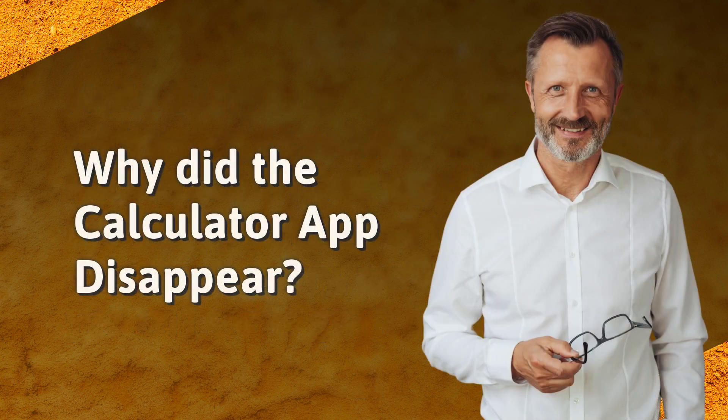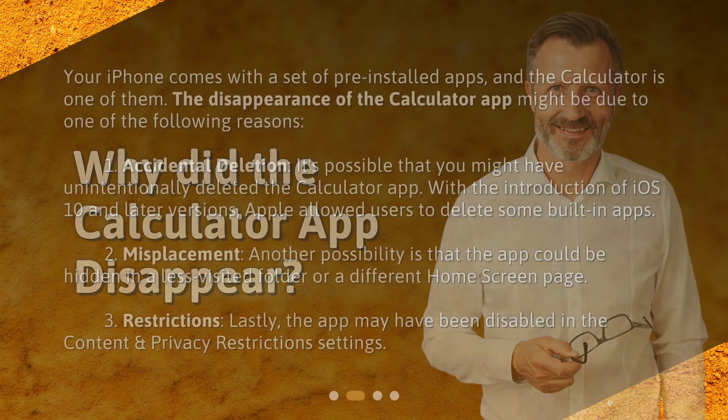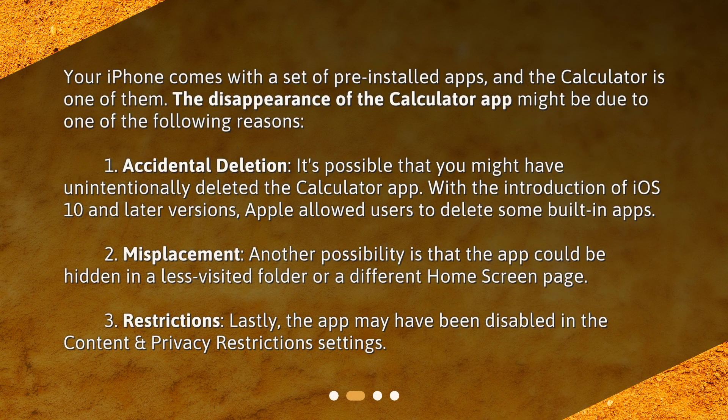Why did the calculator app disappear? Your iPhone comes with a set of pre-installed apps and the calculator is one of them. The disappearance of the calculator app might be due to one of the following reasons. First, accidental deletion. It's possible that you might have unintentionally deleted the calculator app. With the introduction of iOS 10 and later versions, Apple allowed users to delete some built-in apps.